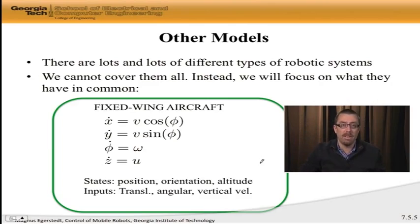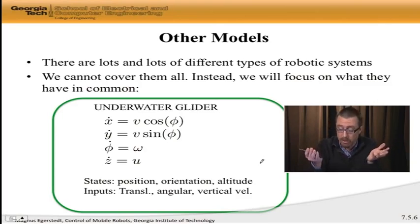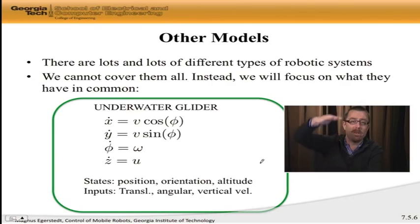Now, let's look at another model. This is the standard model of an underwater glider. Aircraft, underwater glider. Nothing changed, right? So, an underwater glider, people typically model as a unicycle, and then you can go up and down. So, you can go down to a lower depth, or you can climb up towards the surface. Again, unicycle plus an altitude or a vertical component that describes how high up or high down the robot actually is.